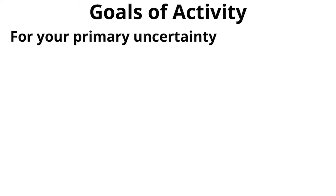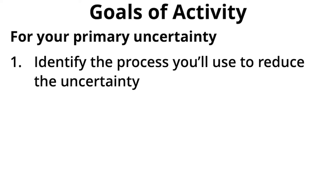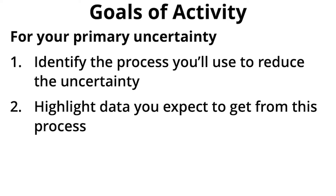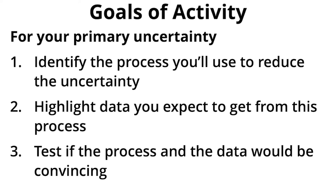At this point you have the key uncertainties identified. In this exercise, what we're going to do is take the primary one you have, identify the process you're going to use to deal with and reduce that uncertainty, and come up with what data you expect to get. You then take that and show it to your partner and ask them whether both the process and the data that comes out of it would be convincing.